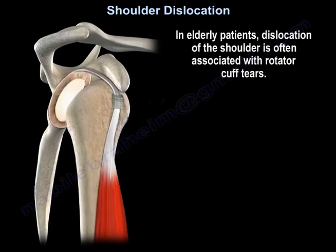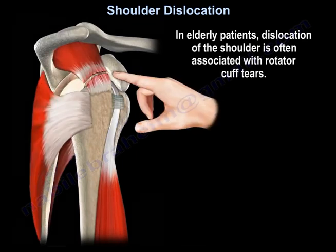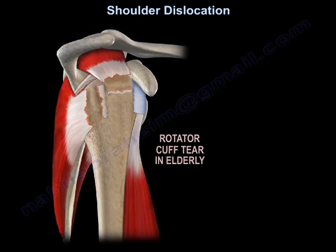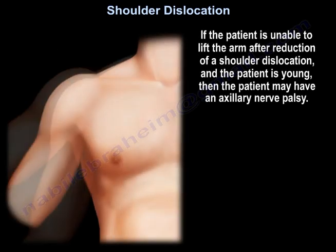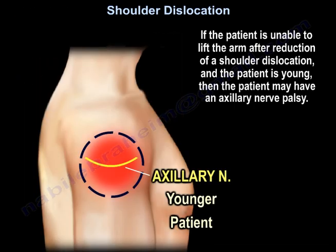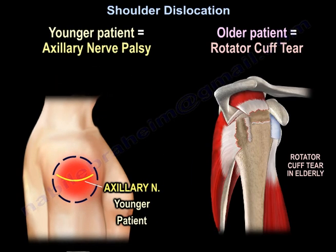In the elderly, dislocation of the shoulder is often associated with rotator cuff tear, as seen in this diagram. If the patient is unable to lift the arm after reduction of a shoulder dislocation and the patient is young, then the patient may have an axillary nerve palsy. But if the patient is old, then the patient probably has a rotator cuff tear.